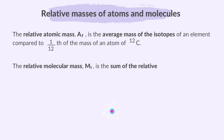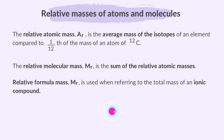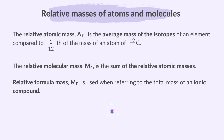The relative molecular mass is the sum of the relative atomic masses. The term relative formula mass is used when referring to the total mass of an ionic compound. To calculate the relative molecular mass of a substance, you have to add up the relative atomic masses of all the atoms present in the formula.